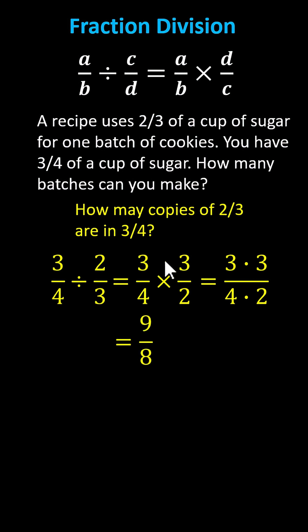Since we're looking for the number of batches you can make, let's convert the improper fraction to a mixed number. Nine-eighths equals eight-eighths plus one-eighth, and eight-eighths equals one, so nine-eighths equals one and one-eighth. Or, because nine divided by eight equals one with a remainder of one, nine-eighths equals one and one-eighth.